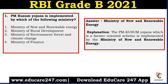The first question is: PM Kusum Yojana is implemented by which of the following ministries? The options are: A) Ministry of New and Renewable Energy, B) Ministry of Rural Development, C) Ministry of Environment, Forest and Climate Change, or D) Ministry of Finance. This scheme — Kisan Urja Suraksha Evam Uttam Maha Abiyan, that is PM Kusum — is implemented by the Ministry of New and Renewable Energy.